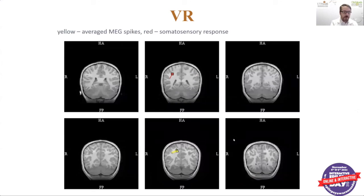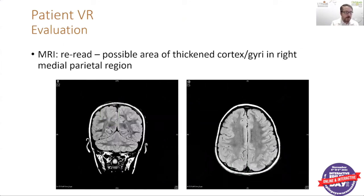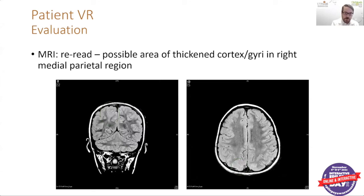The yellow triangles represent the average MEG spikes. Here you can see the sensory information from the air pulse, and the yellow triangles again are the MEG spikes representing the abnormal electrical activity. Interestingly, for this patient, we went back and looked at the MRI knowing this was the area of interest suspected for seizure onset, and we were able to see that perhaps there actually was more abnormal tissue in this area.